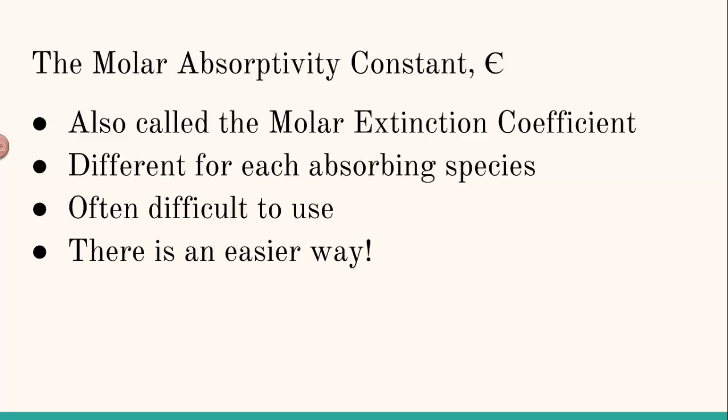or permanganate ions, which are purple, each of those ions that absorbs light has a different value for epsilon. Sometimes it's difficult to use because you have to go look it up, and sometimes it's very difficult to find, especially if you're working with something for which epsilon hasn't been confirmed yet. But there's an easier way to figure out what this value of epsilon is.